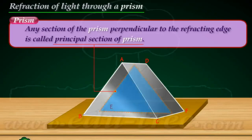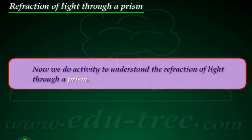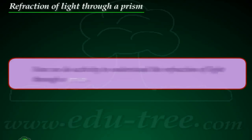Any section of the prism perpendicular to the refracting edge is called the principal section of the prism. Now, we do an activity to understand the refraction of light through a prism.